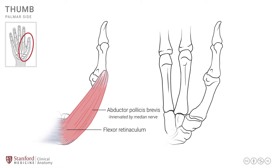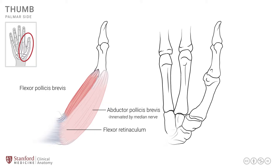The second muscle of the thenar group is known as the flexor pollicis brevis, sometimes abbreviated as FPB. It's a much smaller muscle but has a very similar location and attachment, extending from the flexor retinaculum onto the base of the proximal phalanx. These two muscles form the superficial part of the thenar group, and the flexor pollicis brevis is also innervated by the median nerve.